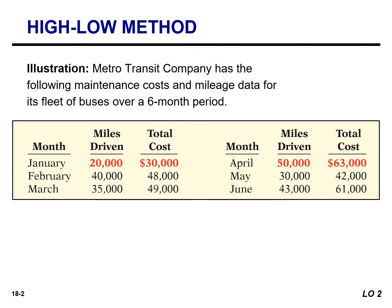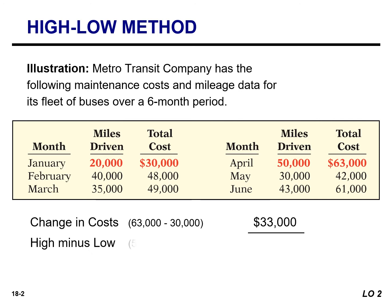The high and low levels of activity are 50,000 miles in April and 20,000 miles in January. The maintenance cost at these two levels are $63,000 and $30,000. The difference in the maintenance cost is $33,000, and the difference in the miles is 30,000. So the numerator is the change in cost, and the denominator is the change in the activity level. If you divide 30,000 into $33,000,